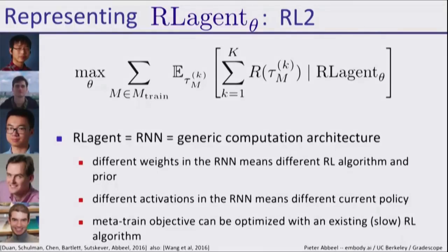The meta training objective at the top can be optimized with standard reinforcement learning. What we do is bootstrap off of standard RL algorithms, let's say PPO, TRPO, A3C, and so forth. Use that to optimize this objective and the consequence would be a recurrent neural net that itself is an agent that has embedded in it reinforcement learning algorithms that are faster.